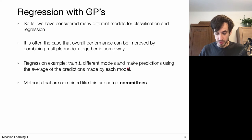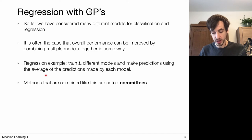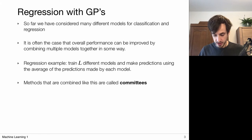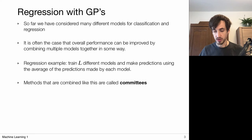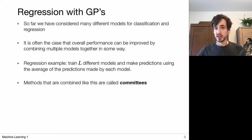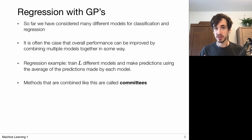We already saw a basic model combination method when we discussed the bias-variance tradeoff. The experiment involved training many different regression models and making a final prediction by taking the average of all these models. That leads to a model with low bias and low variance simply by averaging over models. Methods that combine individual models to come to their final prediction are called committees — they consist of a committee of individual predictors.